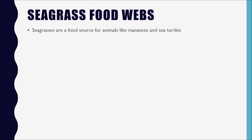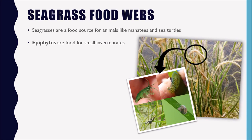Let's talk about seagrass food webs. Seagrasses are a food source for animals like manatees and sea turtles, but there is another type of plant that grows on a blade of seagrass called an epiphyte. The brown fuzzy stuff inside that circle is actually a type of algae, and many small organisms feed on those epiphytes — small invertebrates like snails and shrimp, but also fish like mullet. These epiphytes are primary producers in this habitat, meaning they are the base of this particular food web, creating energy through photosynthesis and then being fed on by other organisms.